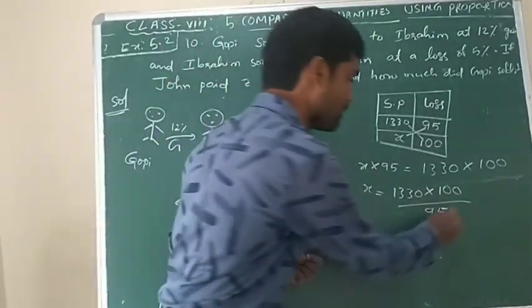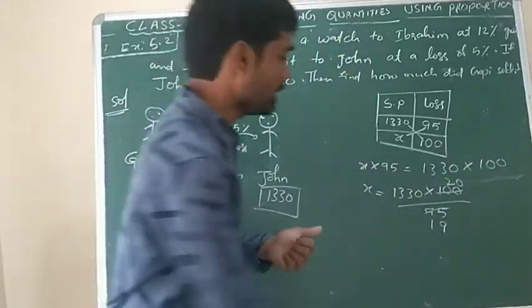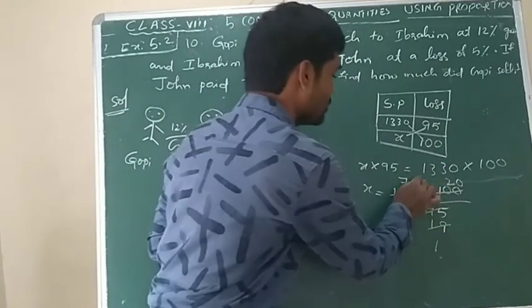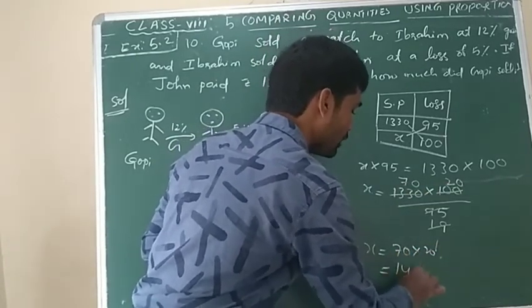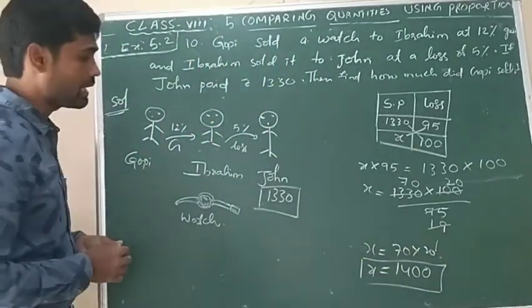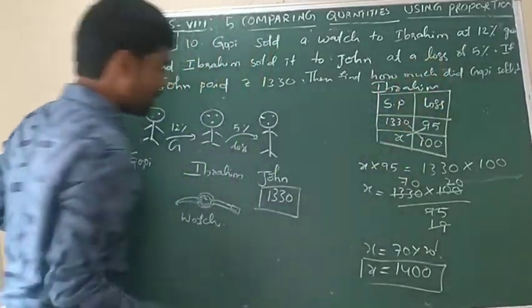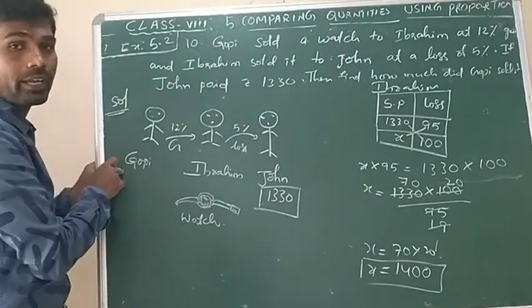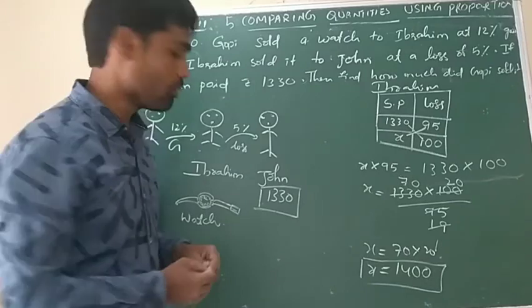Simplifying: 5 can cancel with factors in 1330 and 95. Therefore x = 70 × 20 = 1400. So 1400 is 100% — whose 100%? Ibrahim's. Ibrahim paid 1400. To whom? To Gopi. So Gopi's selling price is 1400.